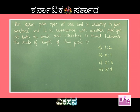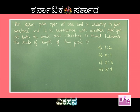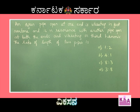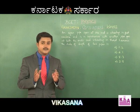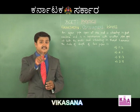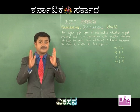Dear students, I have taken a problem based on resonance. An organ pipe open at one end is vibrating in first overtone and is in resonance with another pipe open at both ends and vibrating in third harmonic. The ratio of the length of the two pipes is: option A 1:2, B 4:1, C 8:3, D 3:8. First of all, let us understand what is resonance. Resonance is matching of frequencies — if F1 is equal to F2, then there is resonance.